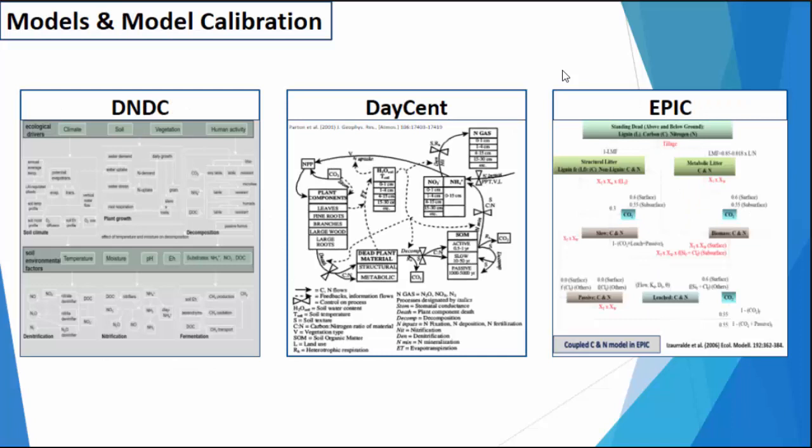These are the three models that we used. You can see in the graphical descriptions that they can be pretty different. We used DNDC, DASINT, and EPIC. Each of these models has been repeatedly tested and validated for simulating multiple agroecosystem properties and also for N2O from agricultural fields.